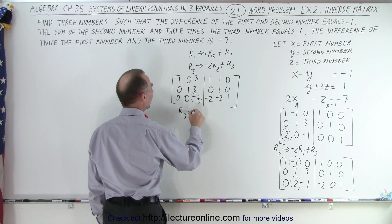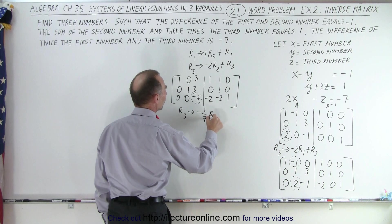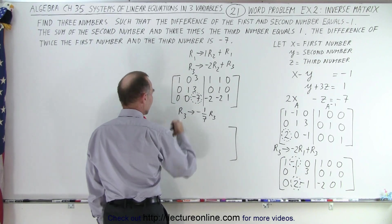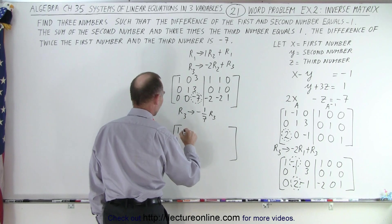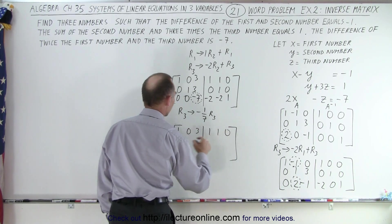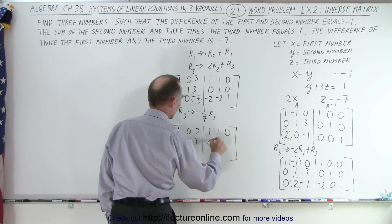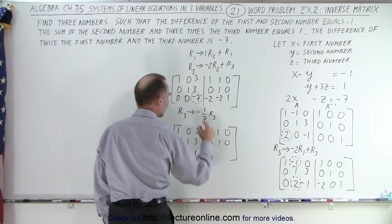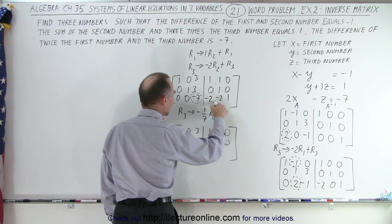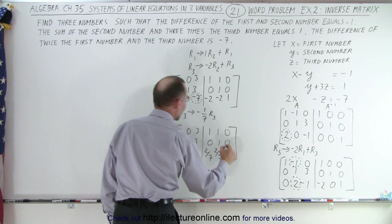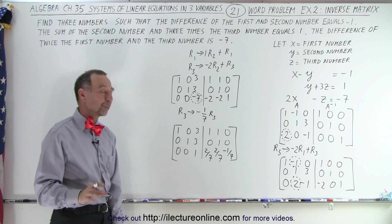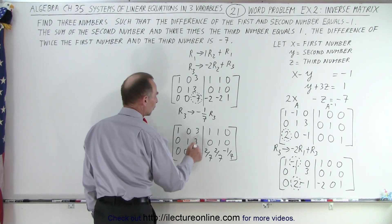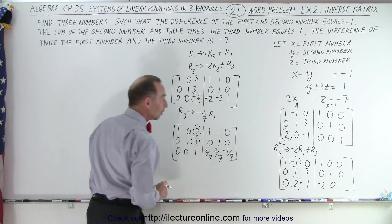Now I need to turn the third pivot into a 1. I can do that by taking the third row and replacing it by negative 1 over 7 times the third row — in other words, dividing the whole row by negative 7. The first row doesn't change: 1, 0, 3 and 1, 1, 0. The second row is 0, 1, 3 and 0, 1, 0. The third row becomes 0, 0; this divided by negative 7 gives me 1; this divided by negative 7 gives me 2 over 7; this divided by negative 7 gives me 2 over 7; and this divided by negative 7 gives me negative 1 over 7. Unfortunately we're ending up with fractions in the third column, but that's how it goes. We have a 1 there now, so I need to get rid of the entries above it — those need to turn into 0s.